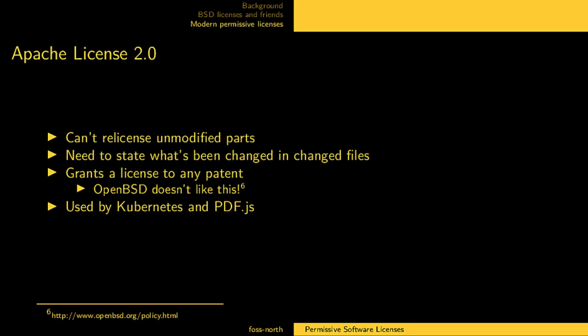A question around the first point: when it says unmodified parts, let's say I take a big project and modify one function in a file with multiple functions. Where does the license start and end — is the entire component considered modified when I modify a single thing? No, if I'm not mistaken, it's a per-file thing.